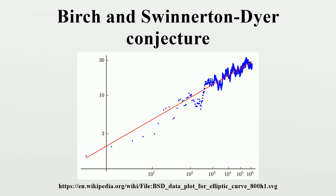Background: Mordell proved Mordell's theorem — the group of rational points on an elliptic curve has a finite basis. This means that for any elliptic curve there is a finite subset of the rational points on the curve from which all further rational points may be generated. If the number of rational points on a curve is infinite, then some point in a finite basis must have infinite order. The number of independent basis points with infinite order is called the rank of the curve, and is an important invariant property of an elliptic curve. If the rank of an elliptic curve is zero, then the curve has only a finite number of rational points.